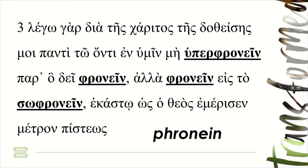Each of those four words are the word 'think' — it's the word phronane. Everybody say phronane. The two in the middle are the straight word phronane for 'think.' But the first word and the fourth word — what Paul has done is he's made a compound word. He's put two words together to make a new word, and the root word in both of those is phronane. At the beginning he uses the term hypair, which is a preposition meaning 'above.' So hypair phronane means thinking above, or to think highly, or to think up. And then the fourth word is sō phronane — sō meaning sound or safe — so it's like safe thinking or sound thinking. So he uses the word phronane four times.